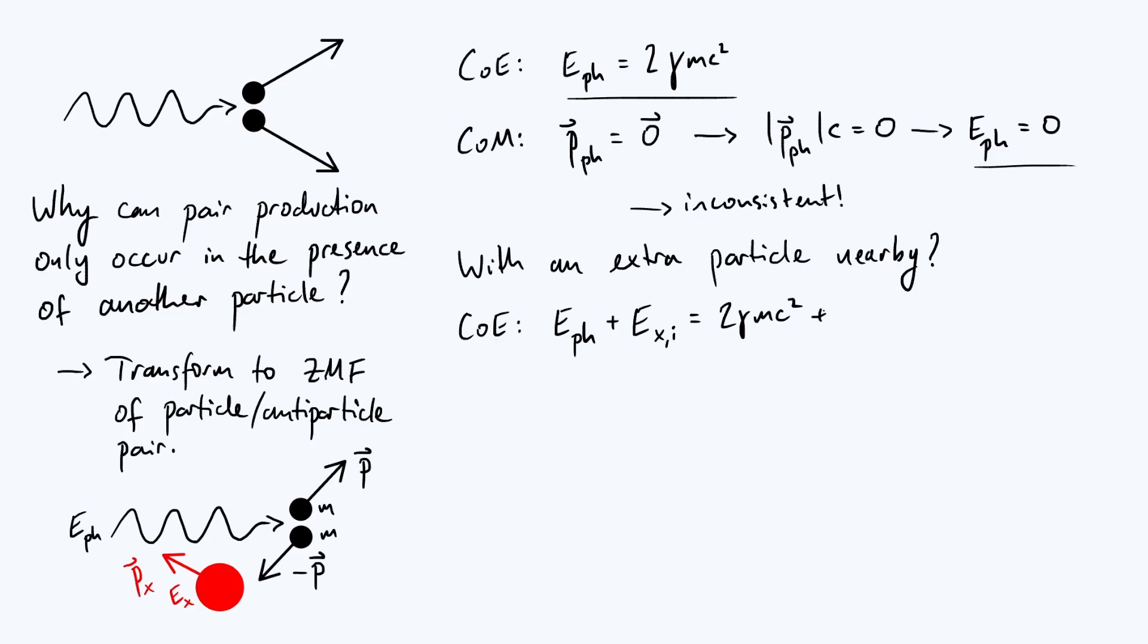But the particle x, this extra particle, is also going to have some energy after the interaction has happened, and so let's just call that e_x comma f, final energy of particle x. This can be rearranged for e_ph, just to get two gamma mc squared, and then it's going to be the final energy of x minus the initial energy of x, so let's just call that plus delta the energy of x.